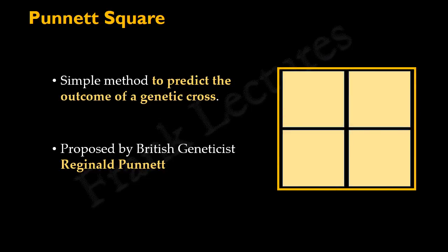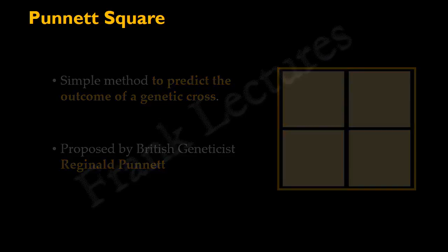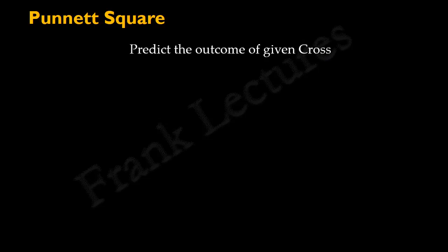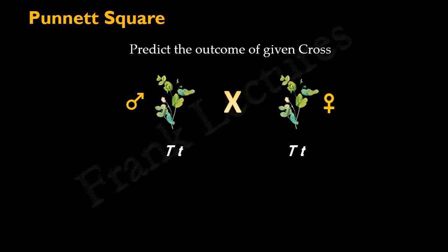Let's understand steps involved in the construction of a Punnett Square. Suppose we want to predict the outcome of the given cross. As you can see here, the male and female parent of this cross are both tall plants. Each has one dominant allele and one recessive allele. So, in the first step, we will write down the gametes produced by each parent.